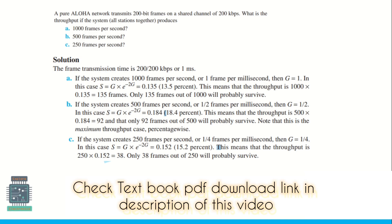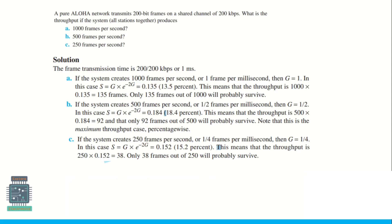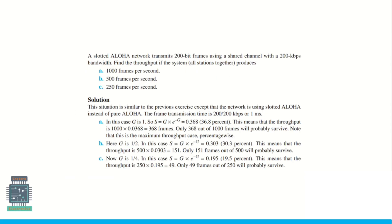You may also expect numerical problems on ALOHA like this: 'A Pure ALOHA network transmits 200-bit frames on a shared channel of 200 kbps. What is the throughput if the system produces 1000 frames per second, 500 frames per second, and 250 frames per second?' This problem is from the prescribed textbook and a solution is provided there. The textbook PDF download link is given in the description of this video.